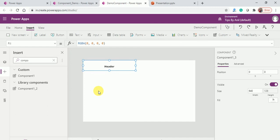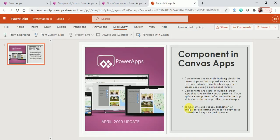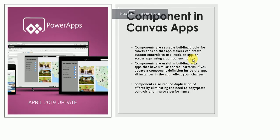We have learned three points in this video: components are reusable building blocks for Canvas Apps so app makers can create custom controls to use inside an app or across apps using a component library. Components are useful for building large applications with similar control patterns — if you update a component's definition, all instances in the app reflect your changes. Components also reduce duplication of effort by eliminating the need to copy-paste controls and improve performance. That's it for today — have a nice day, bye bye!